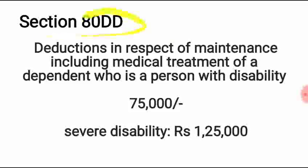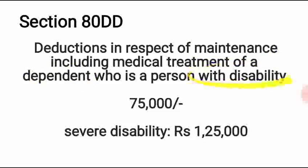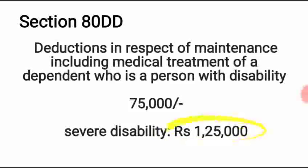Section 80DD covers all deductions that a government employee incurs for the maintenance of a dependent who is a person with disability. The government allows Rs. 75,000 as a deduction; in the case of severe disability, Rs. 1,25,000 is the deduction allowed.